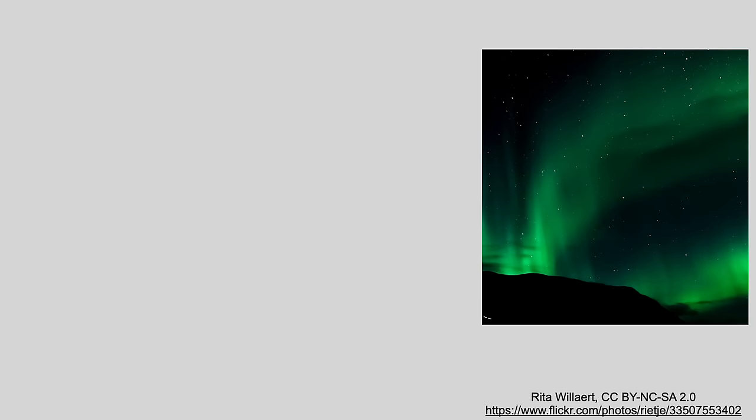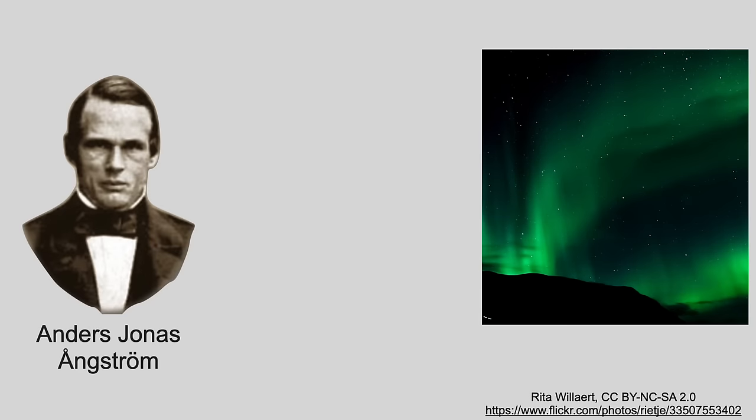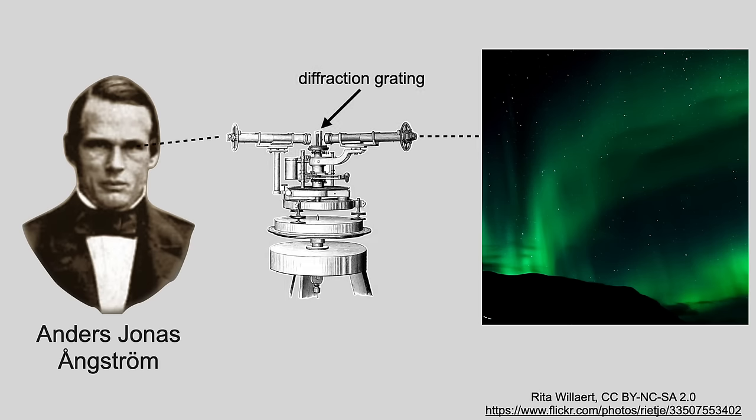So what's the spectrum of the aurora? In 1867, Anders Angstrom pointed his spectrometer at an aurora and discovered that the green color has a wavelength around 557 nanometers. However, he wasn't able to identify its source.